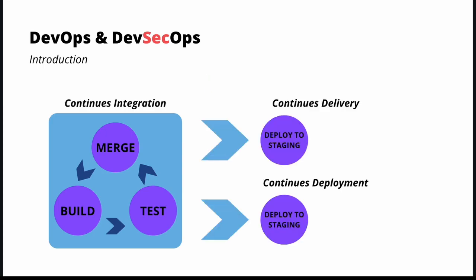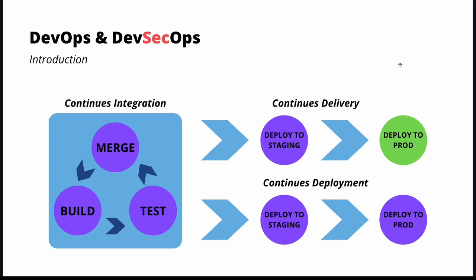The next steps, depending on whether we are doing continuous delivery or continuous deployment, might be deploying to some staging environment. In the case of continuous delivery, we may have some additional manual verification before deploying to production. In continuous deployment, everything is automated, even the deployment to production. So this is the foundational overview of the DevOps landscape.